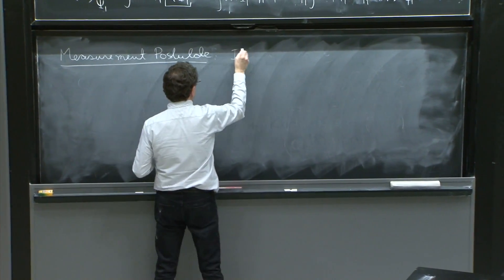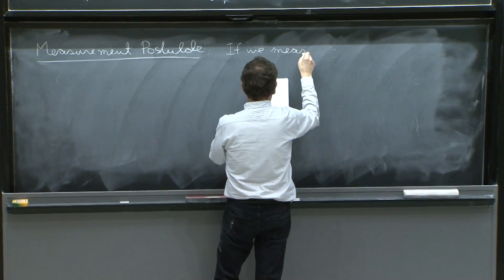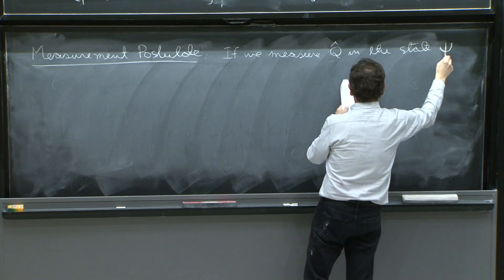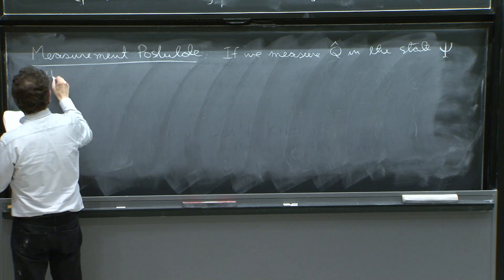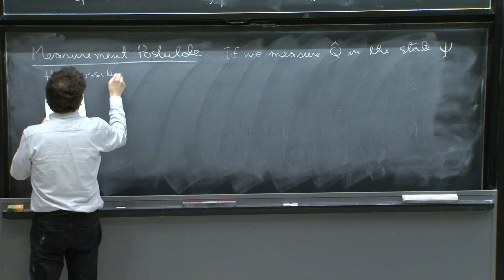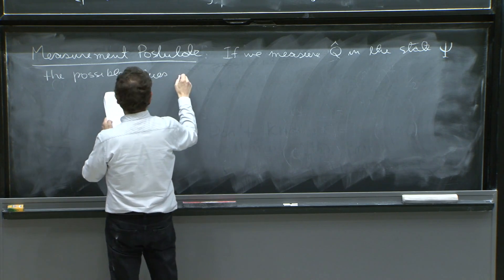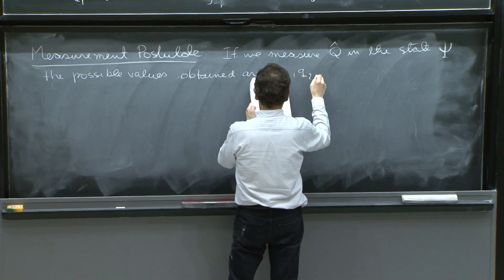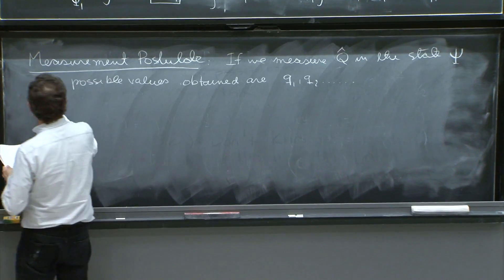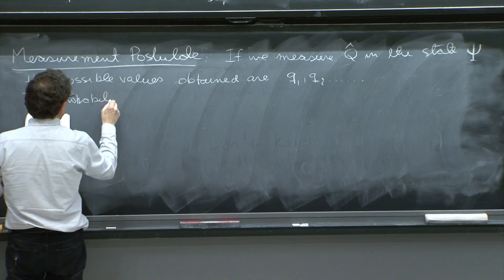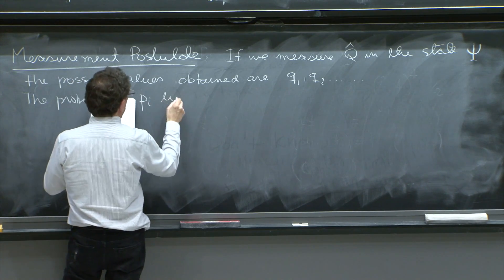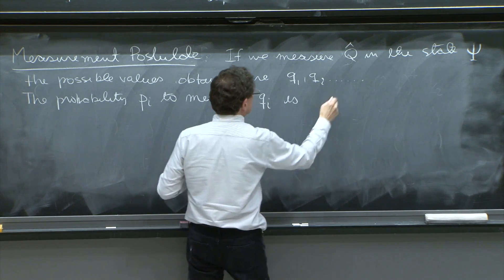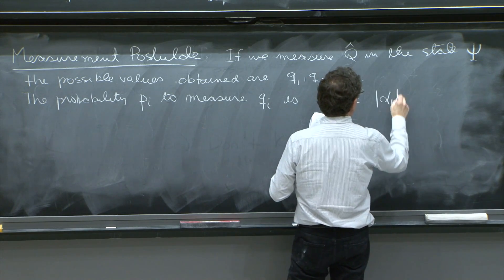If we measure Q in the state psi, the possible values obtained are q1, q2, and so on.